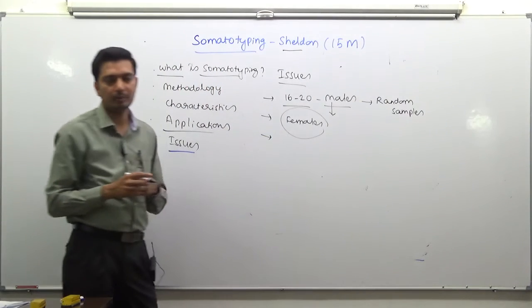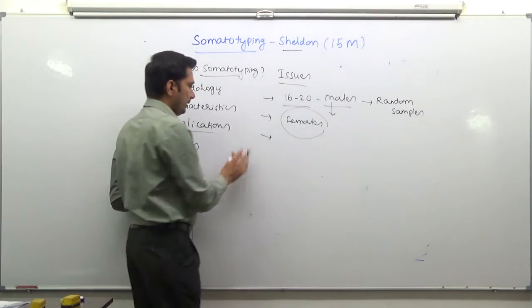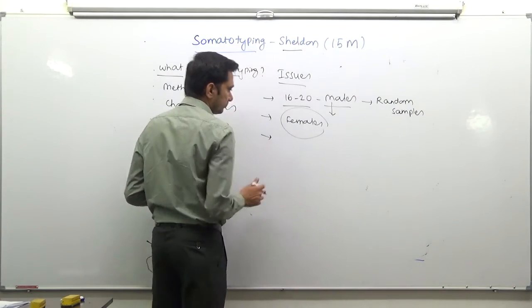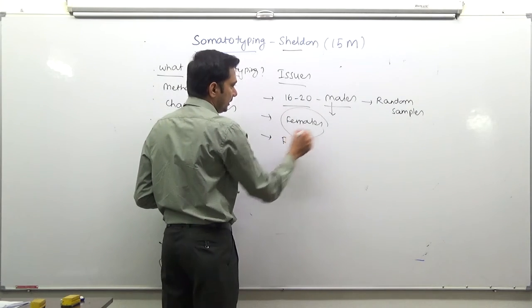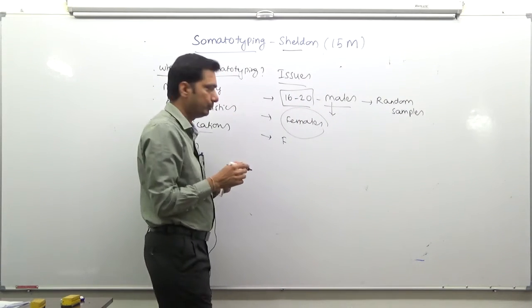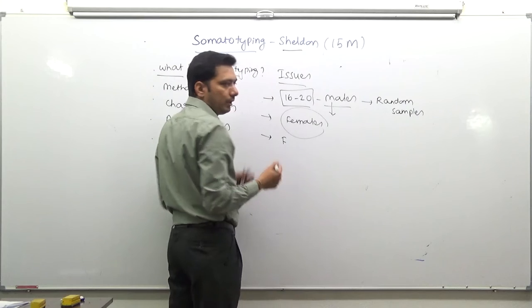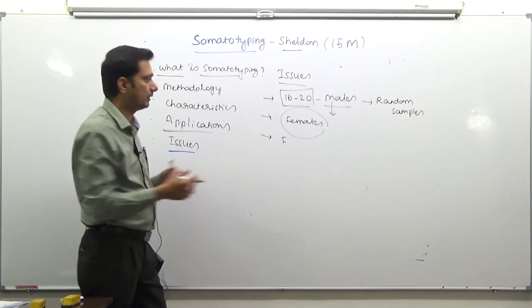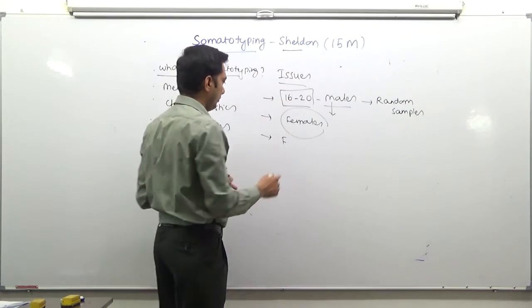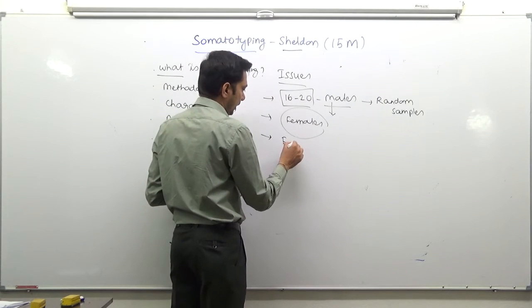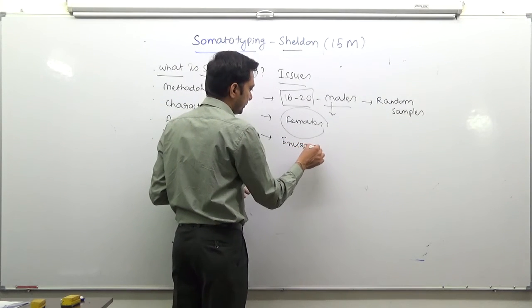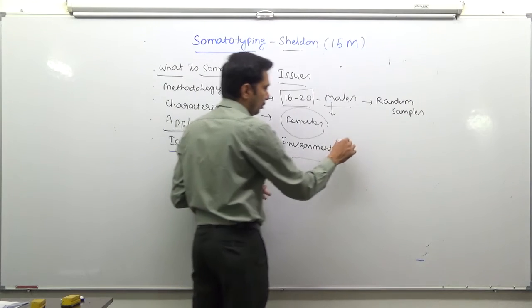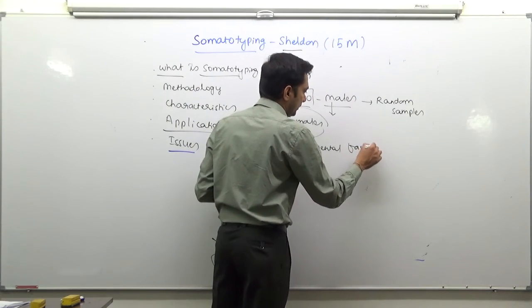Another problem concerns age. They took 16 to 20 year age group. Body types have different influences from environment, and the same body type might change over time. Environmental factors that influence the body over time are not considered.